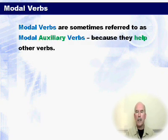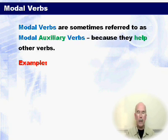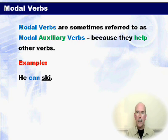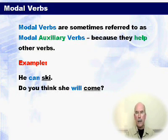Modal verbs are sometimes referred to as modal auxiliary verbs, because they help other verbs — auxiliary meaning 'help'. So for example, 'he can ski' — ski is the main verb, can is helping the main verb. 'Do you think she will come?' — come is the main verb, and will is the modal verb.